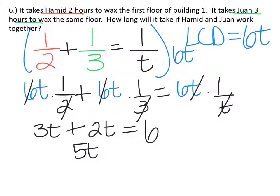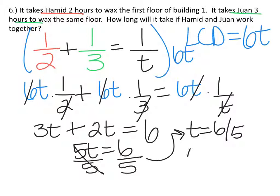equals five T equals six. And I'm solving for T. So T equals six over five, or we can divide and we'll get 1.2 hours. So it takes 1.2 hours to wax the floor if Hamid and Juan work together.